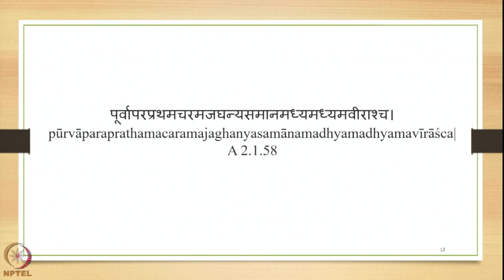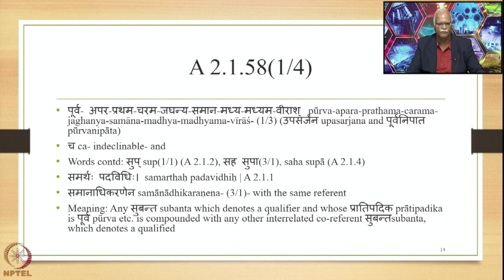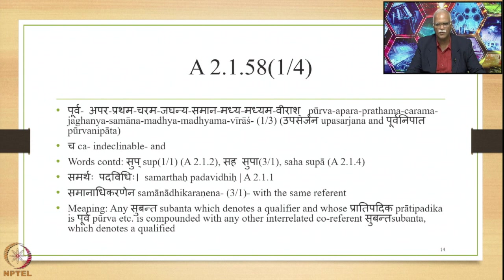Now let us look at the next sutra: Urva-Apara-Pratama-Charama-Jaganya-Samana-Madhyam-Virashya, sutra 2.158. There are two words in the sutra: Purva-Apara-Pratama-Charama-Jaganya-Samana-Madhyam-Madhyam-Vira, and Ch. The first word has many constituents, all mentioned in the Prathama Vivakti. So they will be termed Upasarjana and will occupy the initial position in the compound.